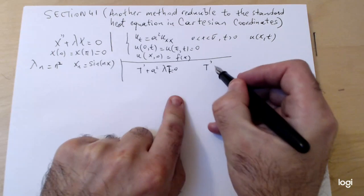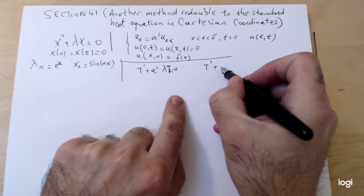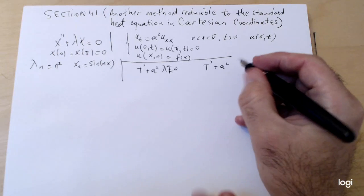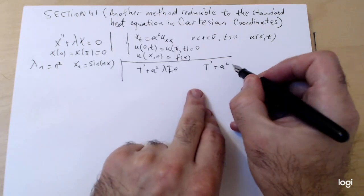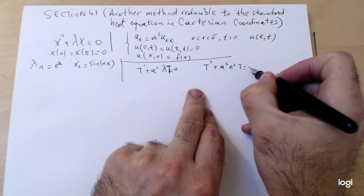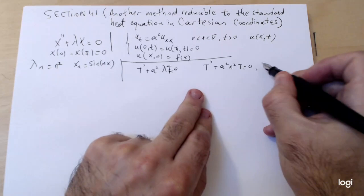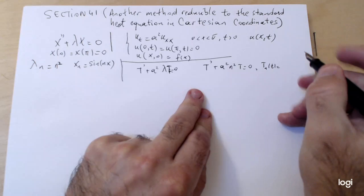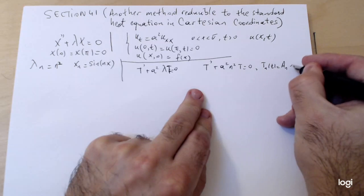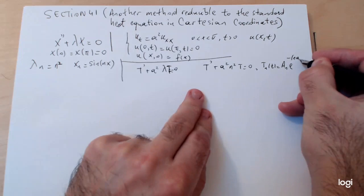Remember you solve the initial value problem for each eigenvalue λ_n. So T' plus a² λ_n t equals zero. If you substitute lambda with λ_n, you have T' plus a² n² T = 0, with solution T_n(t) = a_n e^(-n²a²t).